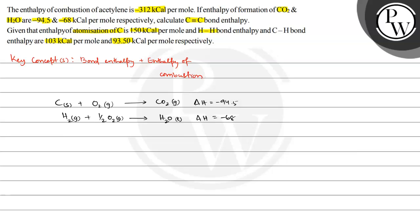These are nothing but the combustion enthalpies of carbon and hydrogen respectively. Now let us consider the formation reaction of acetylene: 2 carbon solid plus H₂ gas gives C₂H₂ gas. This is acetylene, requiring 2 carbon atoms.